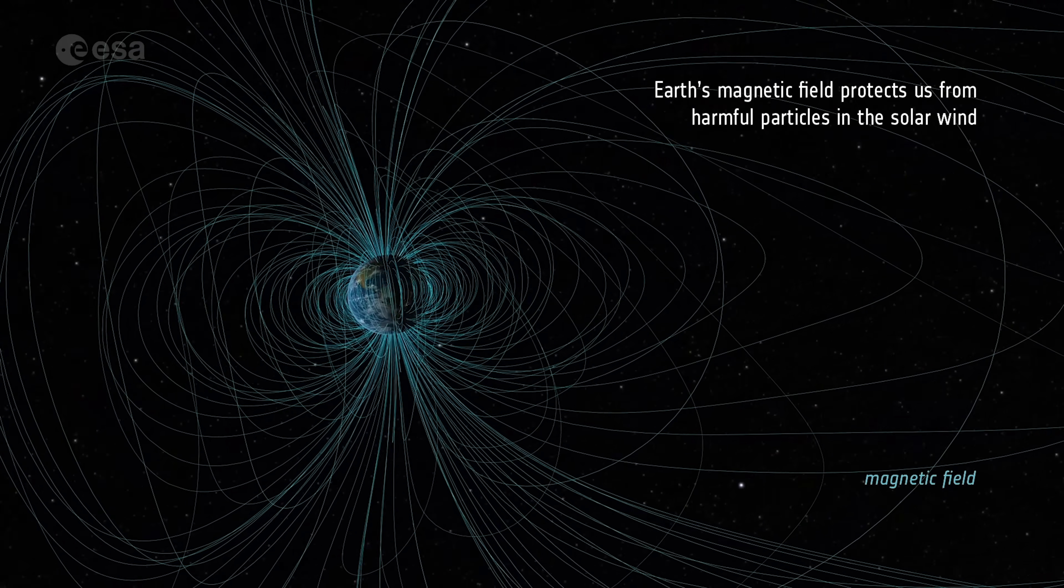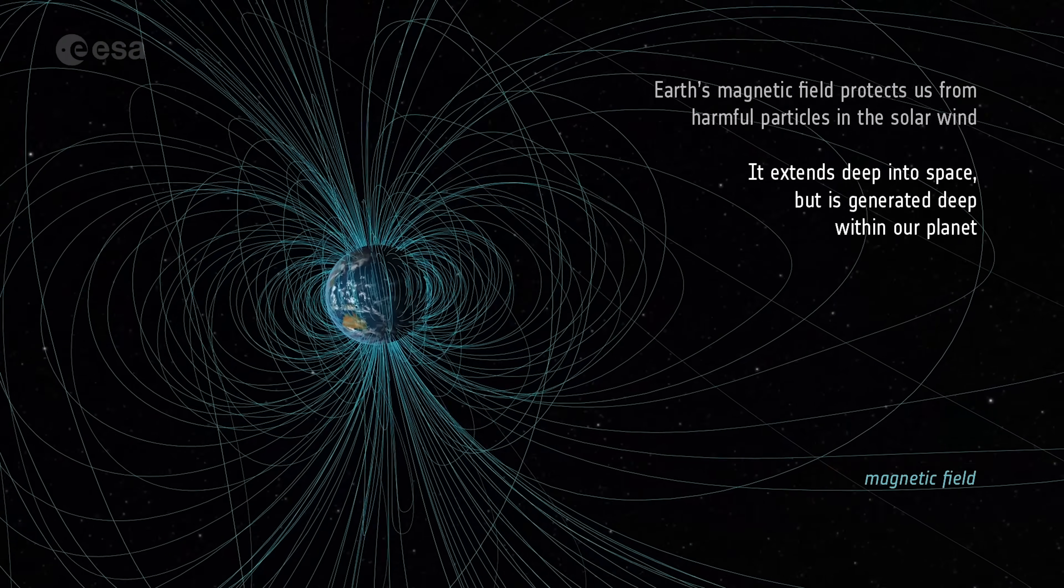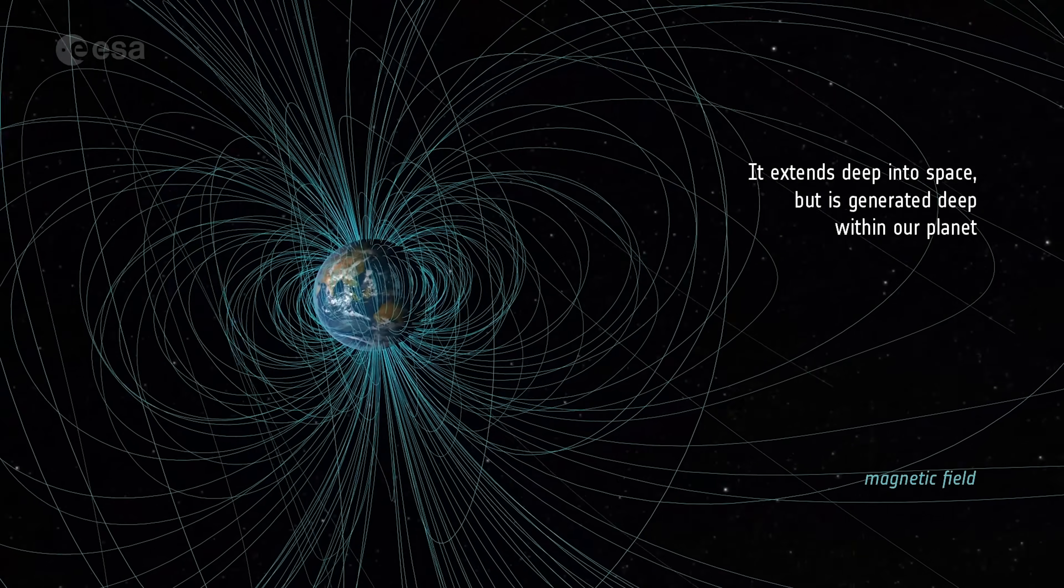Earth's magnetic field protects us from harmful particles in the solar wind. It extends deep into space, but is generated deep within our planet.